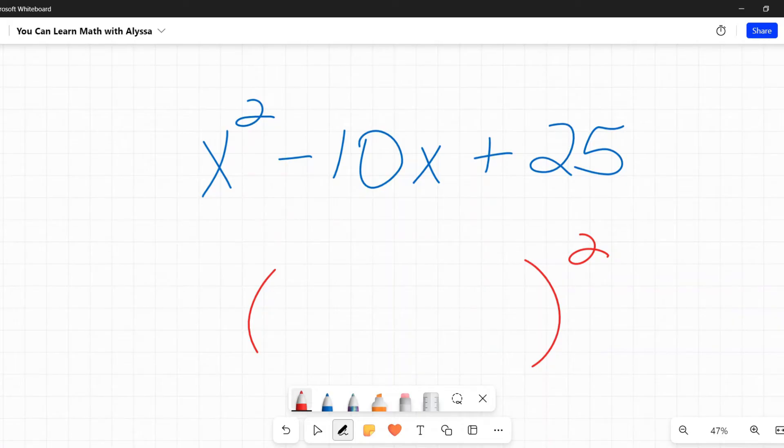When we started with the binomial and we were going into this quadratic, we said we would take this first term and square it. So we're going to undo that. We're going to go backwards. In algebra, we want to undo things. What's the opposite of squaring something? It's square root. So what is the square root of x squared? That is x.